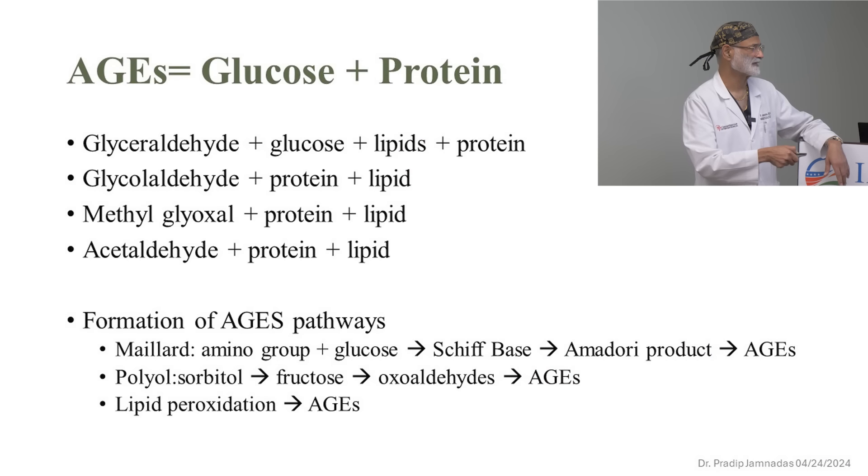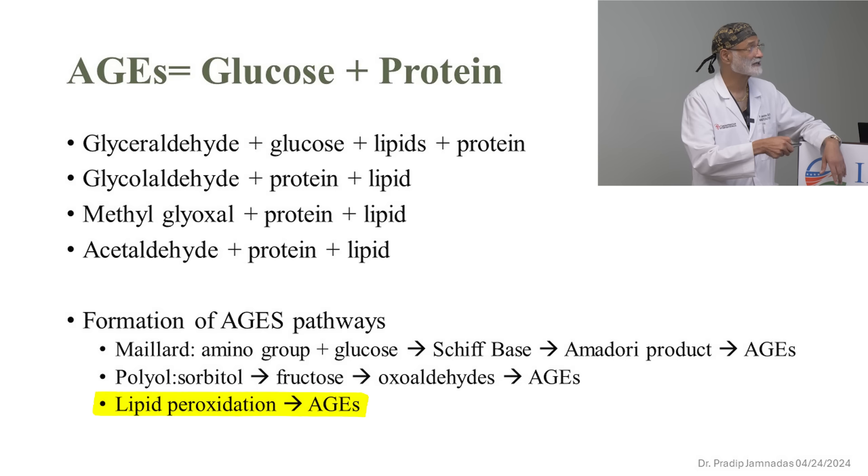Look at lipid peroxidation. Your fats, once they get oxidized, produce advanced glycation end products. So don't let your fats get oxidized. Which fats get oxidized? I showed you — polyunsaturated fats and monounsaturated fats. Saturated fats cannot get oxidized. You can put a teaspoon of ghee on your plate and a month later it's still okay, it hasn't become rancid. But walnut oil — within one hour it's rancid. Any vegetable oil left in the open: in a matter of hours they start going rancid. Rancidity means oxidation.